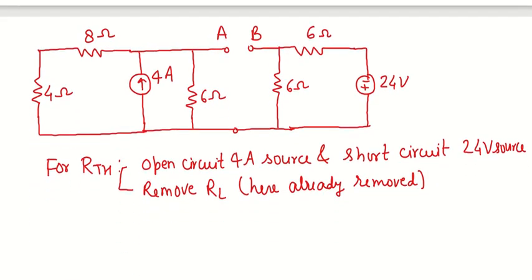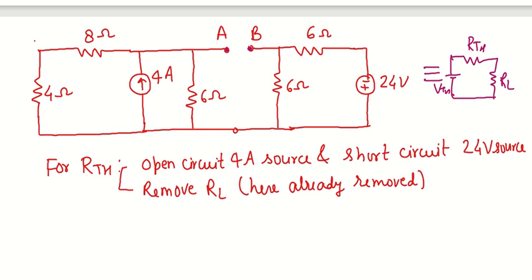Now we take a second example for Thevenin's circuit. The goal is to convert the circuit into a simpler form with VTH, RTH, and RL. In this example the load resistance is not shown — it has already been removed from terminal A and B. We assume there was a load resistance connected across terminals A and B. The first task is to find RTH.